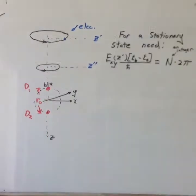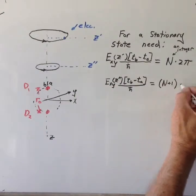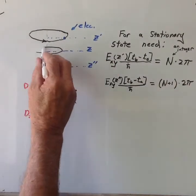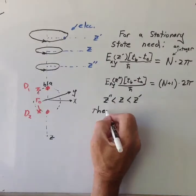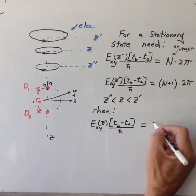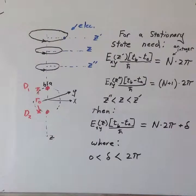along the z-axis which will give a phase factor of n plus 1 times 2 pi. Then, an arbitrary point z between these two points will give n times 2 pi plus del, where del is between 0 and 2 pi.